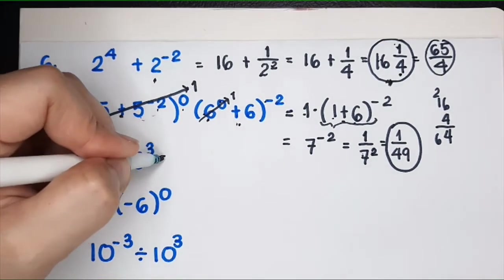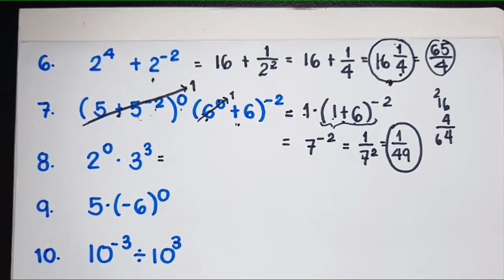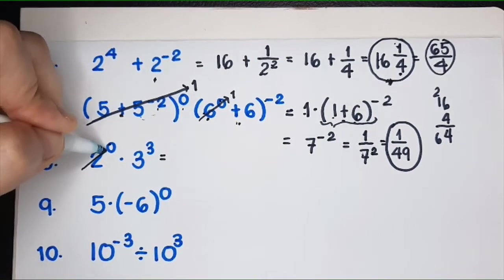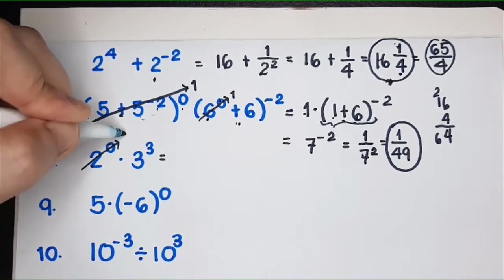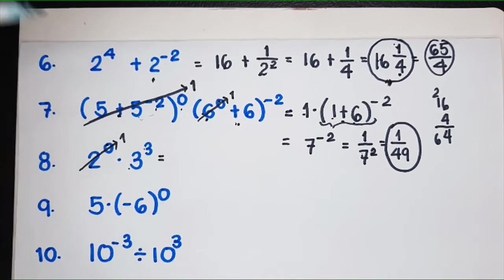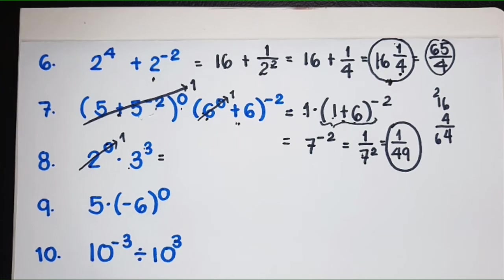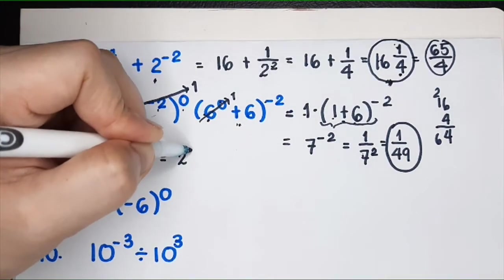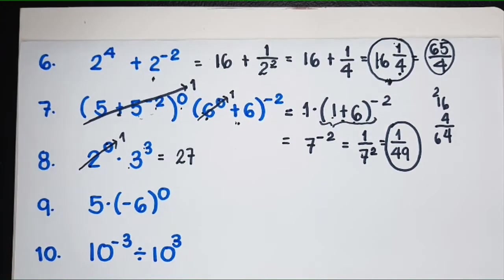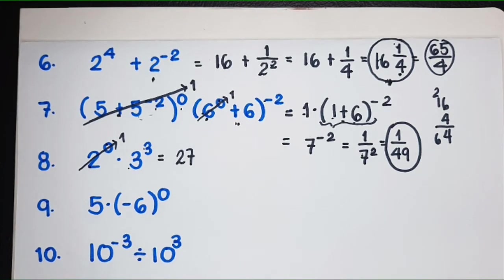For number 8, what is 2 raised to 0? It's 1. What is 3 cubed? That's 3 times 3 equals 9, times 3 equals 27. Easy peasy!